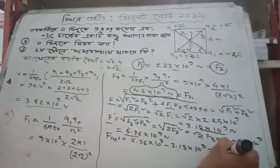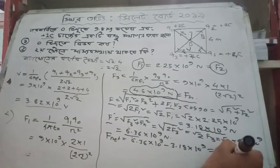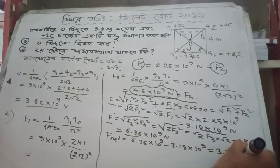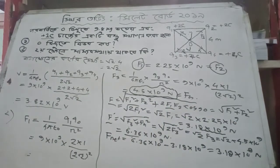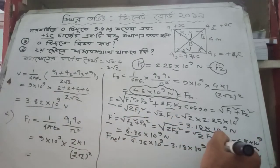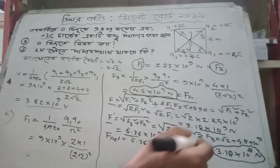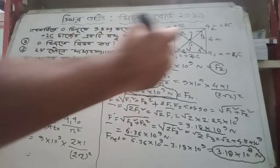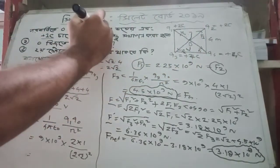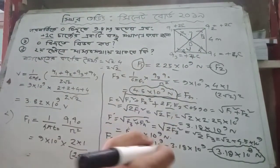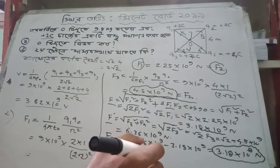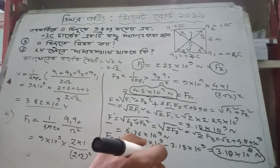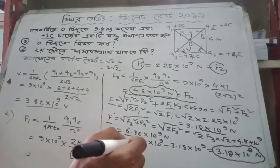The net force is 3.18 × 10^9 Newton. Now, this force acts upward on the object.